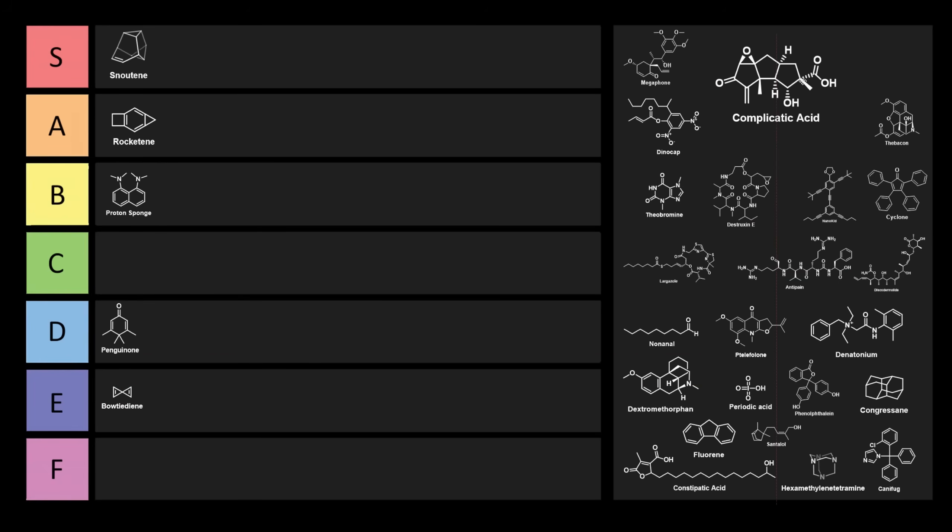Now Complicatic Acid. Complicatic Acid is pretty complicated. The structure has several different rings. Its name comes from the fact that it's a natural product found in Stereum Complicatum. The name is fairly apt, although I think the aptness of its name is complicated by the fact that I'm getting rather annoyed by it. I think that one can go into B tier.